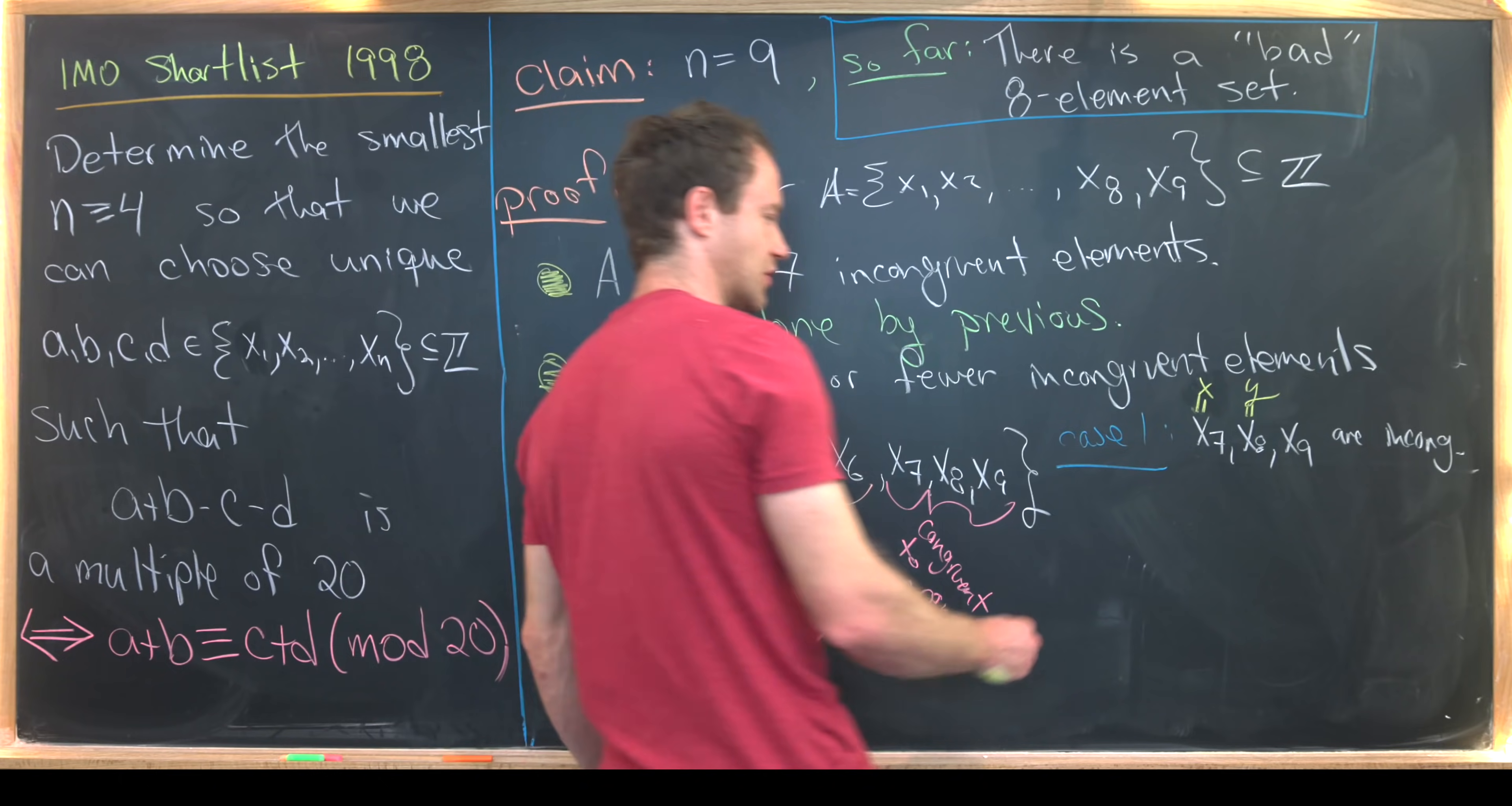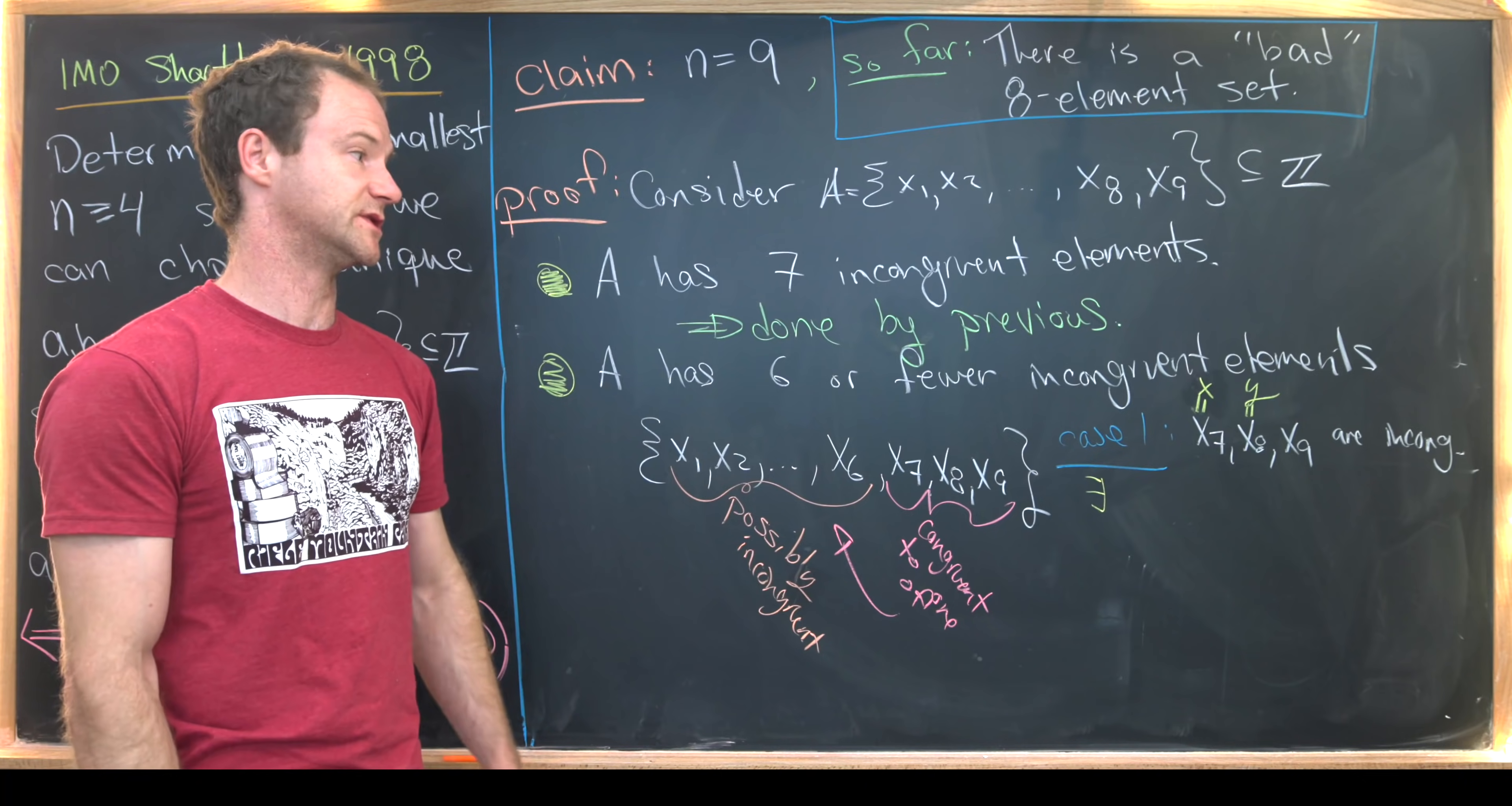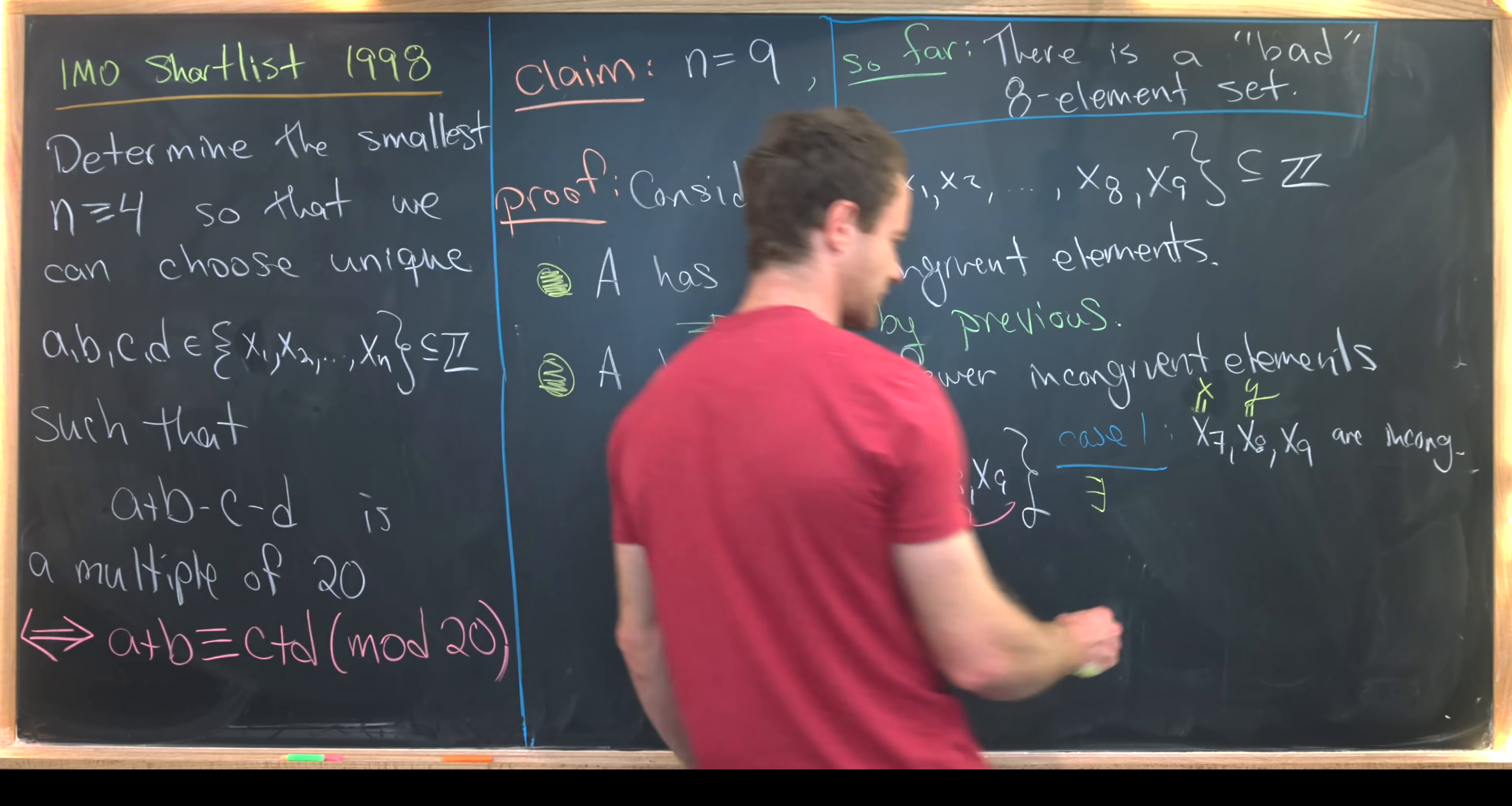But that means that there's an x1 through x6 that is congruent to x. Again, because of our observation over here. And there's an x1 through x6, which is congruent to y. So let's write it like this. So there exists an i and a j, i not equal to j,